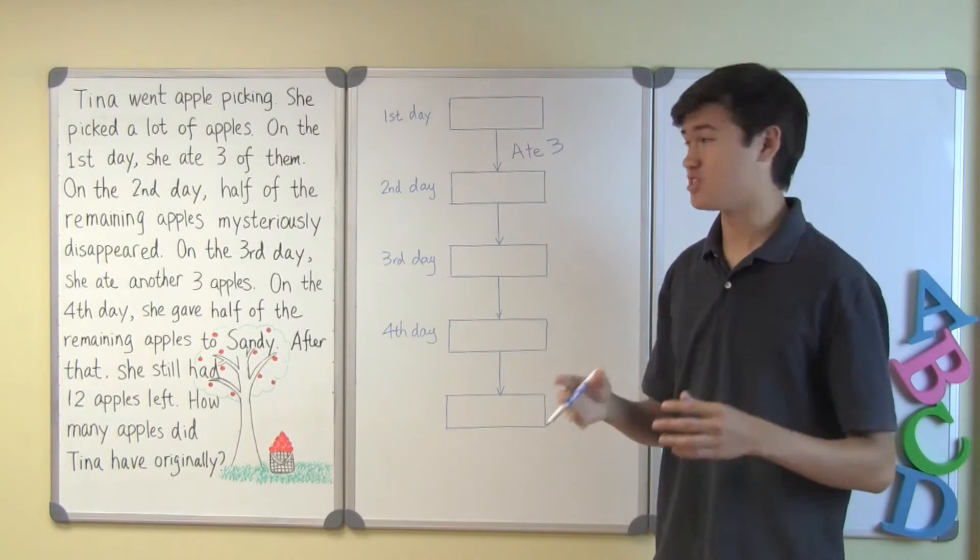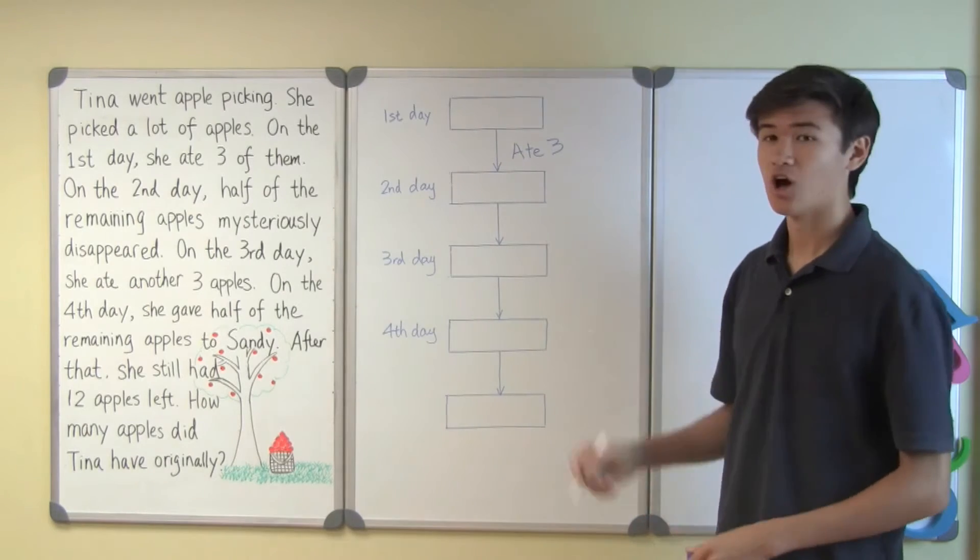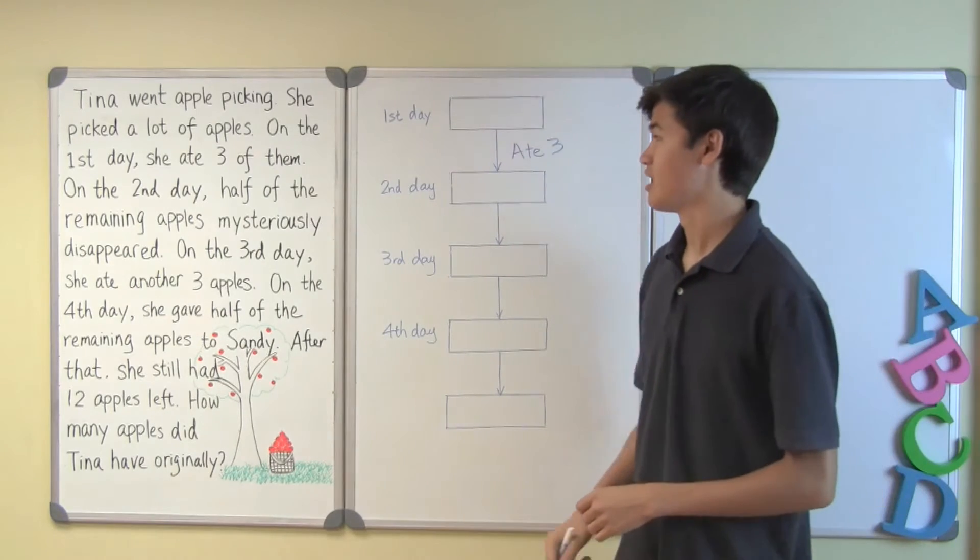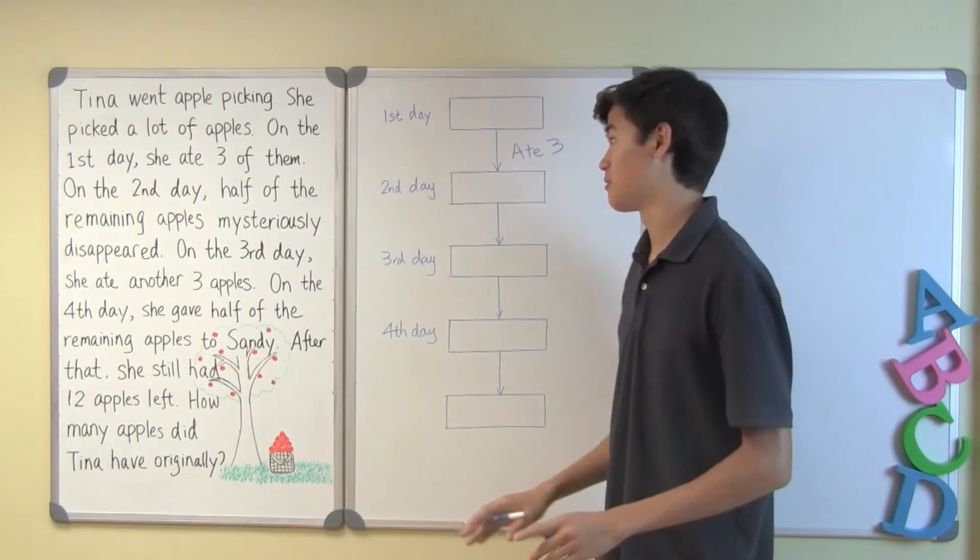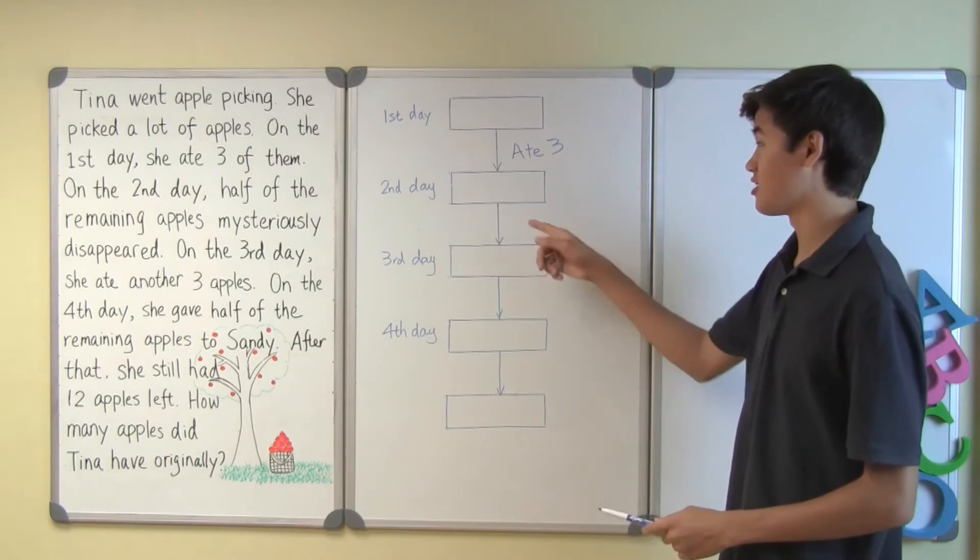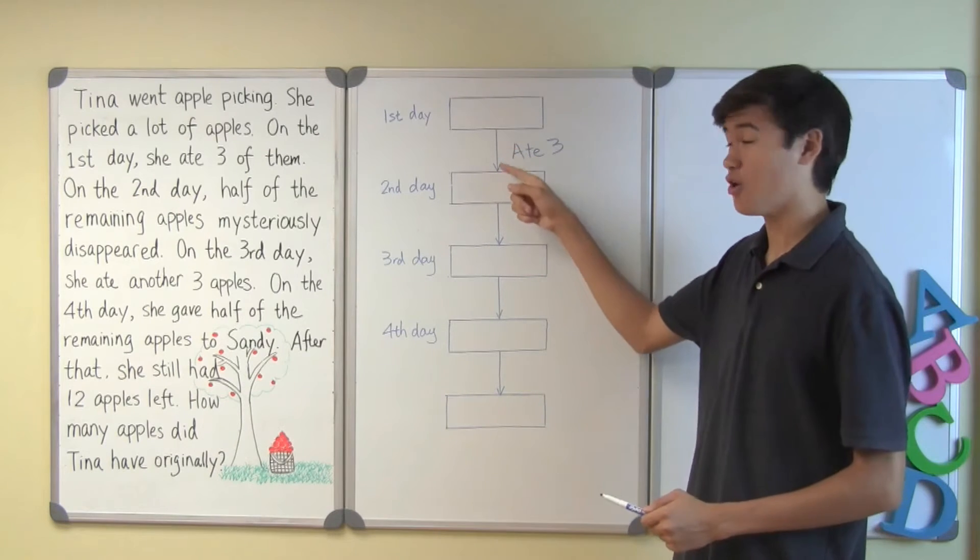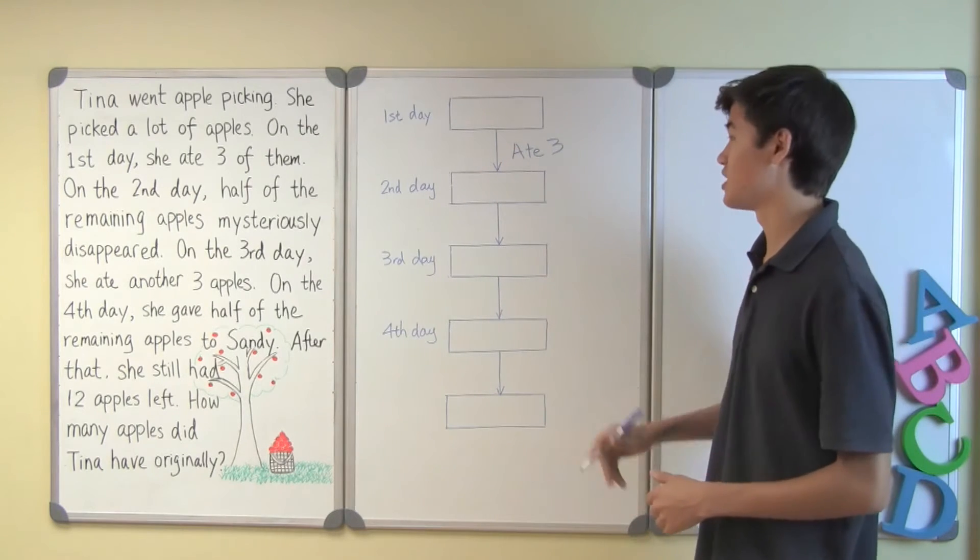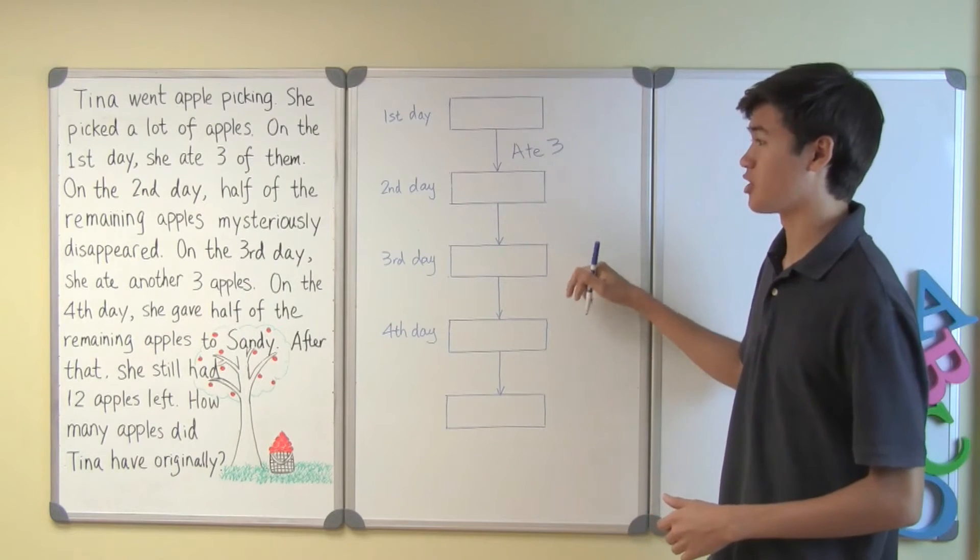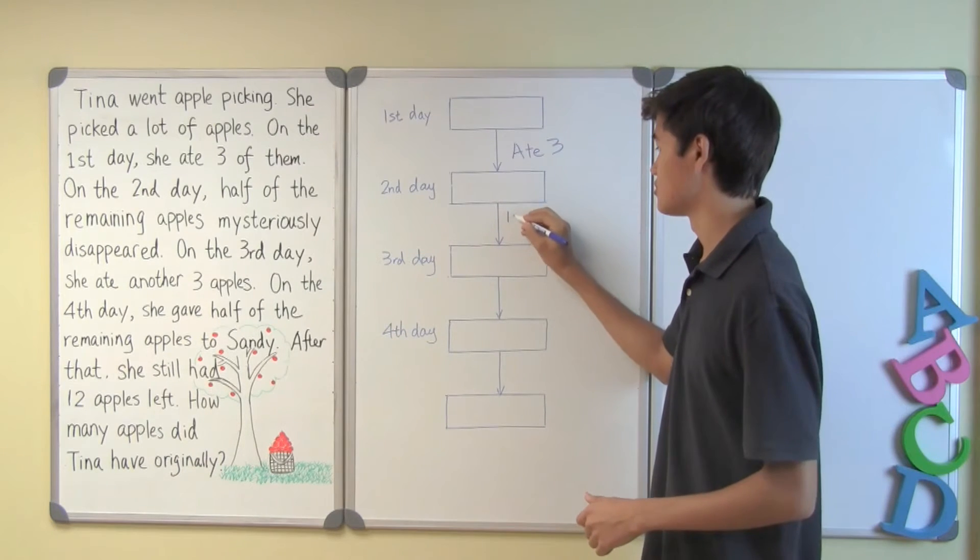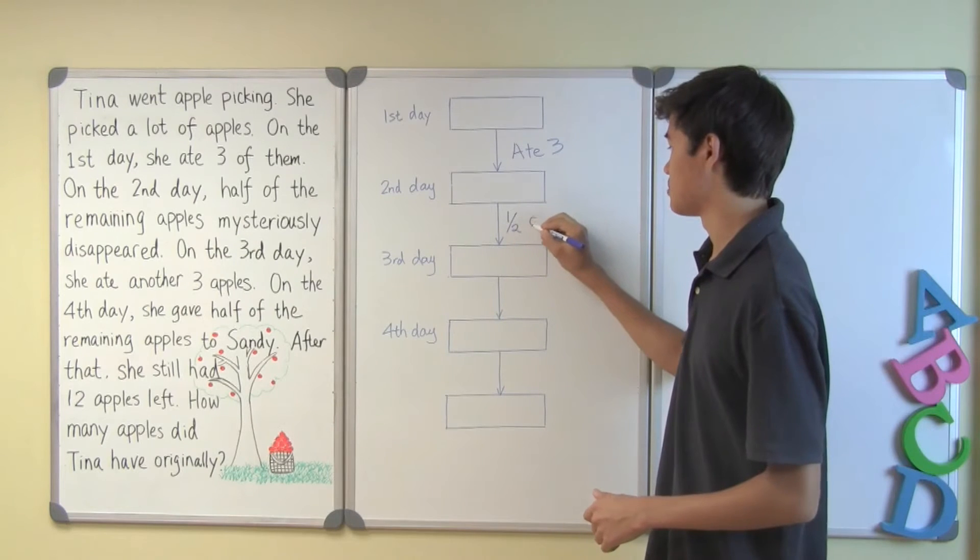Now we can go to day two. On day two, according to the question, half of the remaining apples mysteriously disappeared. We can put that here since this arrow, similarly to this arrow, indicates a change between the number of apples between day two and day three. So we can write half of the apples disappeared.